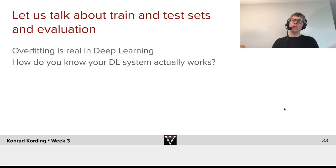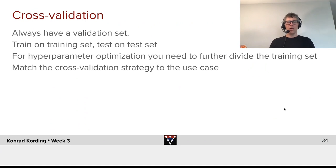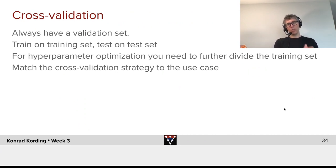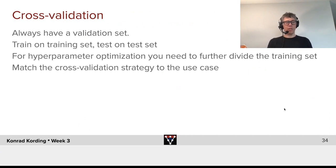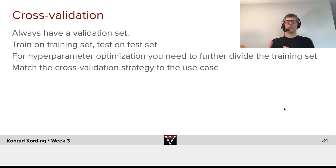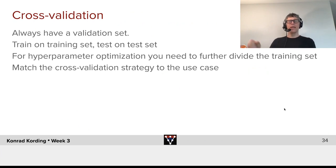So how do you know that your deep learning system actually works? We use cross-validation for that. You always want to have a validation set. What we often do is n-fold cross-validation — we divide the data into k pieces and train on k-1 and test on the last one. We don't do that all that much in deep learning, because the extra compute cost is simply much too large. But what we can and should always do is have a training set and a test set.